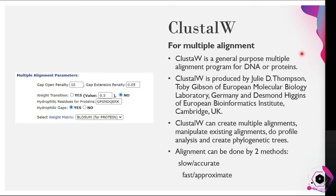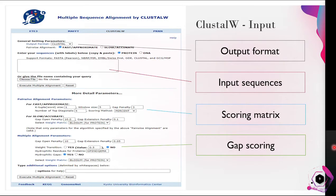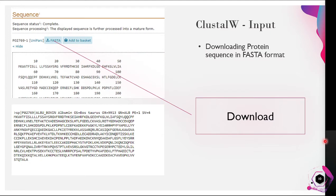ClustalW can create multiple alignments, manipulate existing alignments, do profile analysis, and create phylogenetic trees. Alignments can be done in two ways: a slow and accurate way, or a fast and approximate way. When we open the ClustalW page, a similar interface is seen. Data can be entered in various formats and obtained in various formats as well. The scoring matrix and gap score values can also be altered.